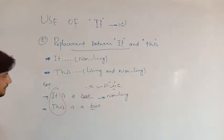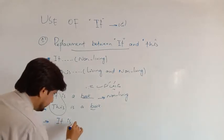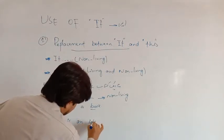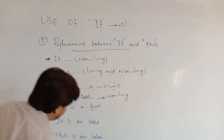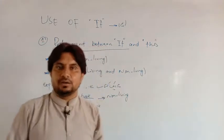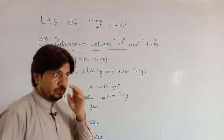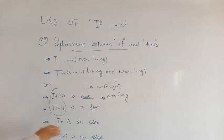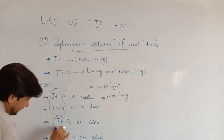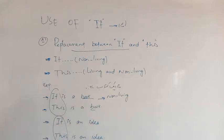Another example: 'It is an idea.' You can also say 'This is an idea.' Because 'idea' is an abstract noun — you cannot feel or touch it, and anything you cannot touch is called an abstract noun. So here, since 'idea' is not a living thing, 'it' and 'this' can be replaced with each other. Both sentences give the same meaning with no difference.